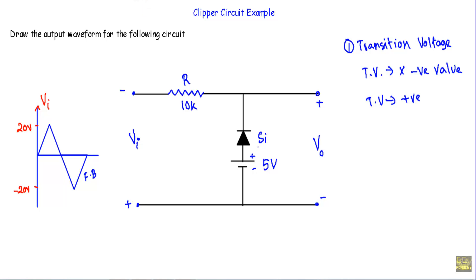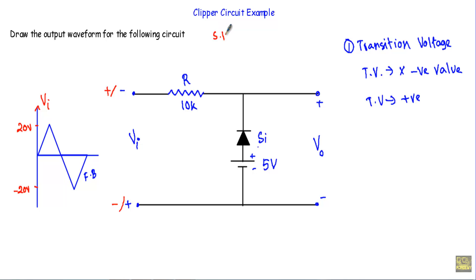During the positive half cycle of the input voltage, this terminal will be positive and this terminal will be negative. Here we have two voltage sources: one is the bias voltage and the other is the applied input voltage. When we have more than one energy source in a circuit, we usually apply the superposition theorem to calculate the total effect.